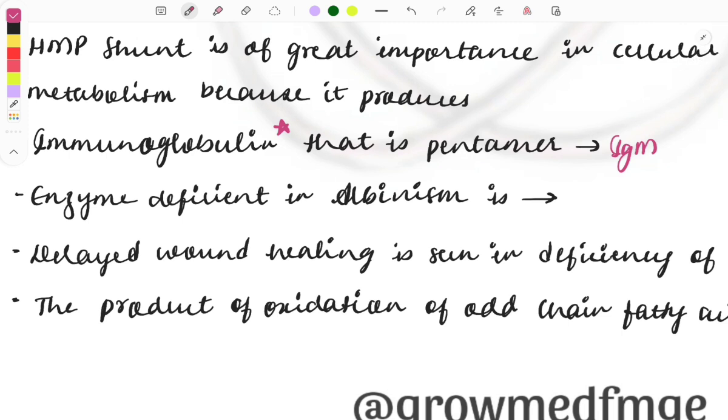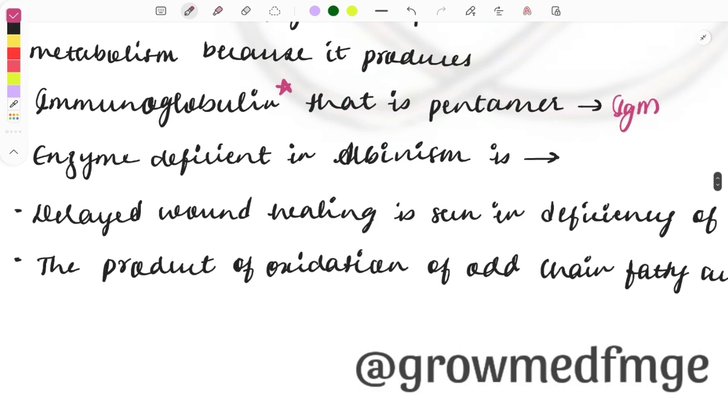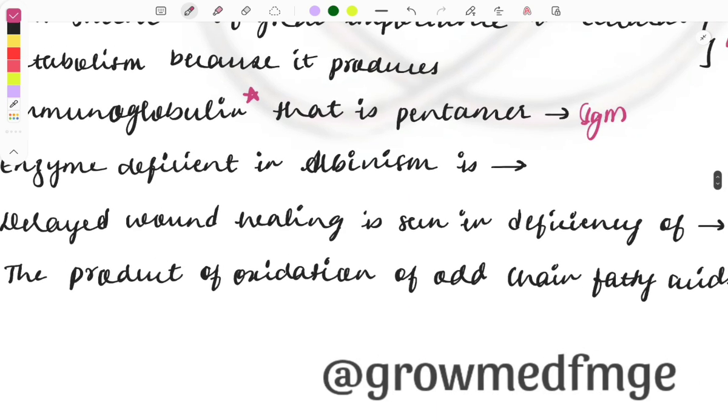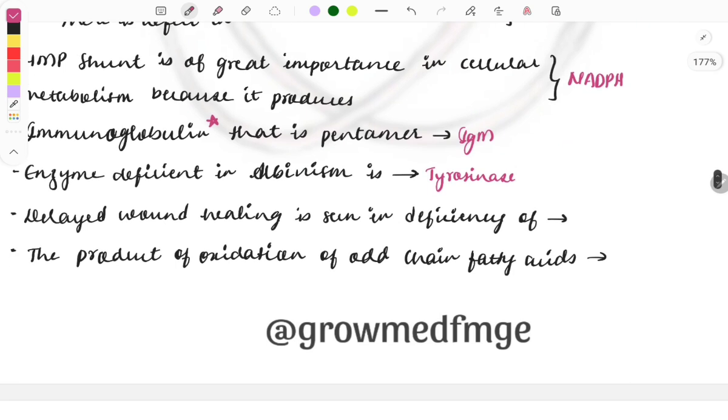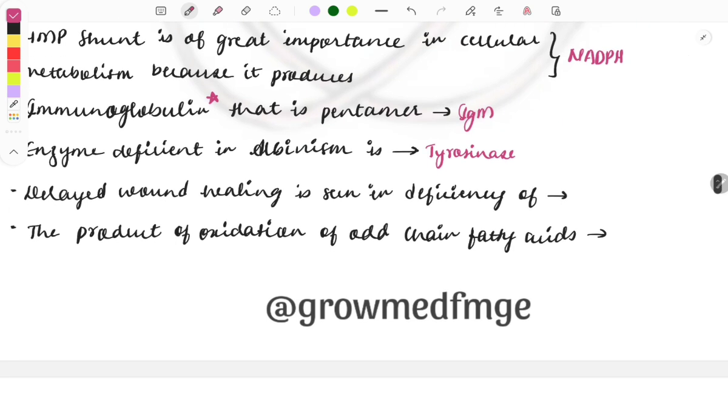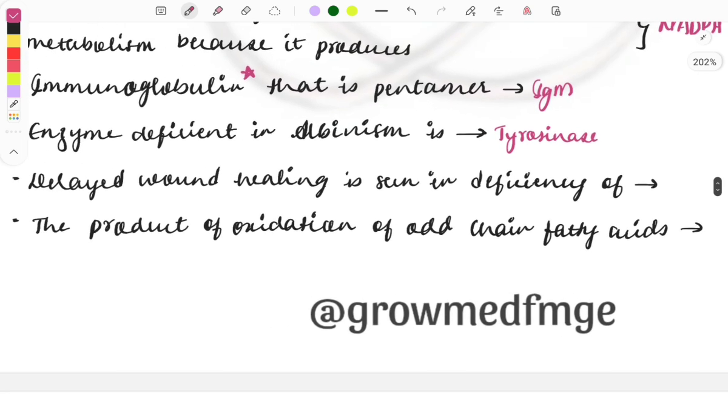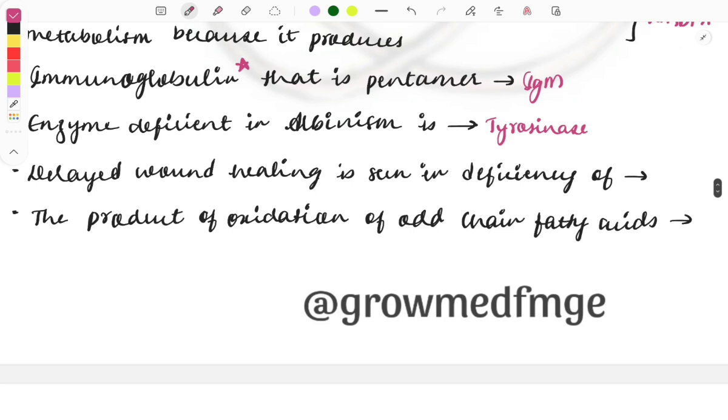Enzyme that is deficient in albinism is tyrosinase. So tyrosinase enzyme deficiency will be causing albinism, that is the white patching. Albinism means melanocytes will not be forming, due to which there will be white patches seen, the white hair, fair skin, and sometimes the eyeball will also be affected giving a different color.